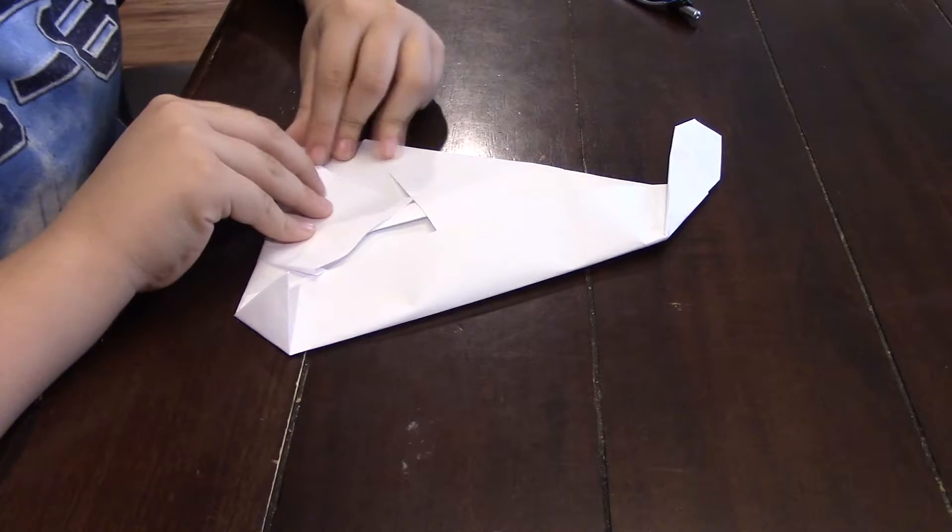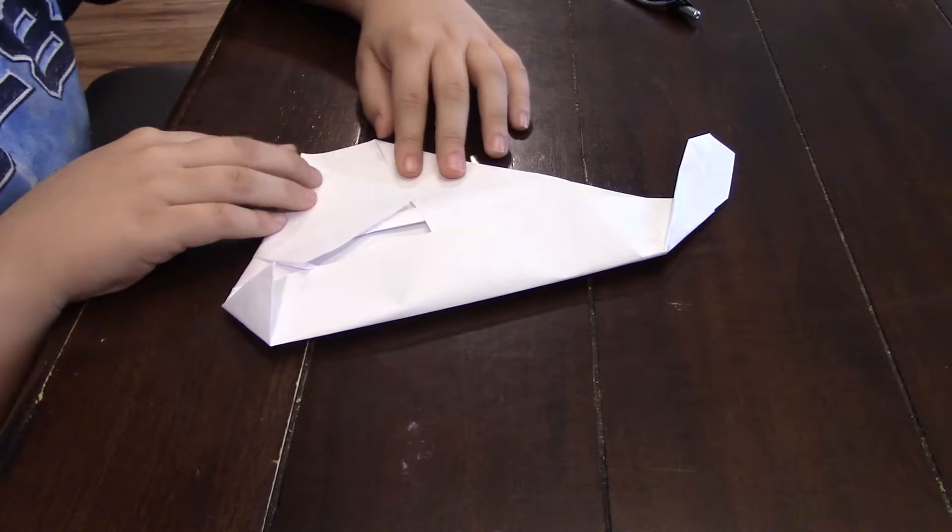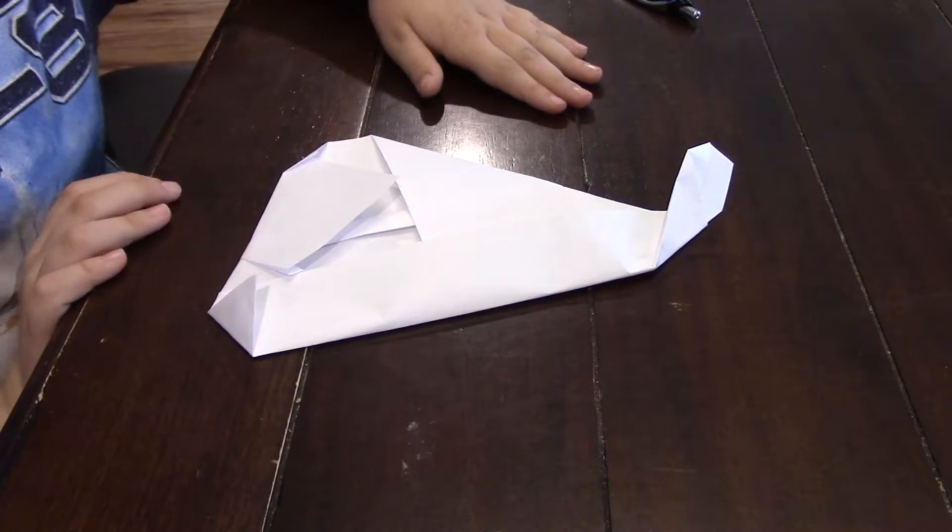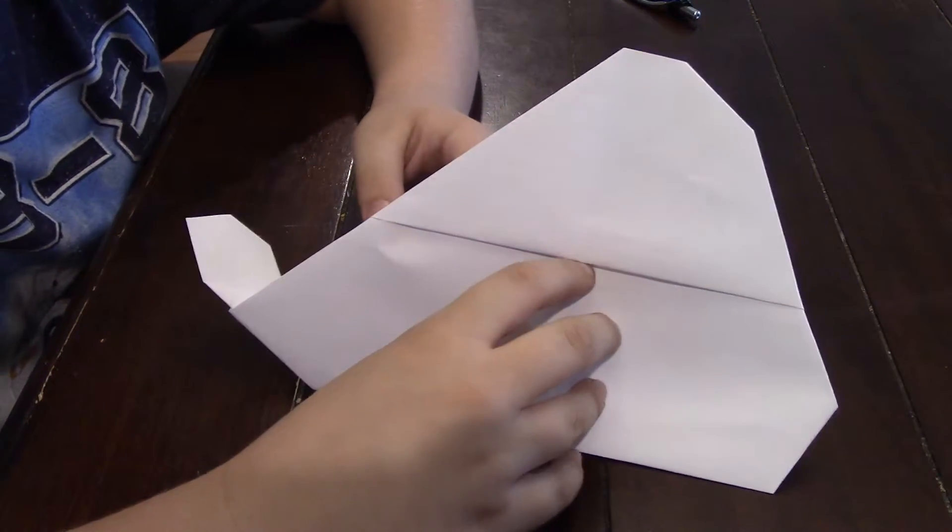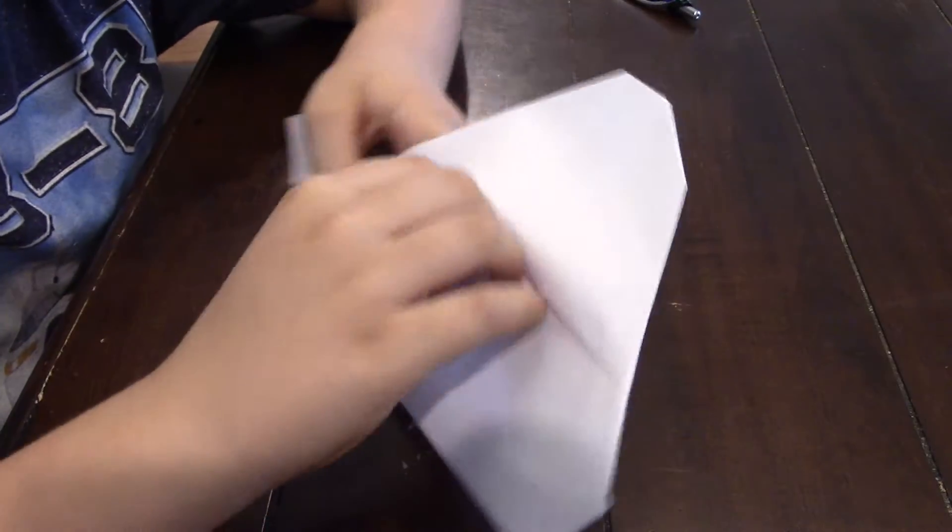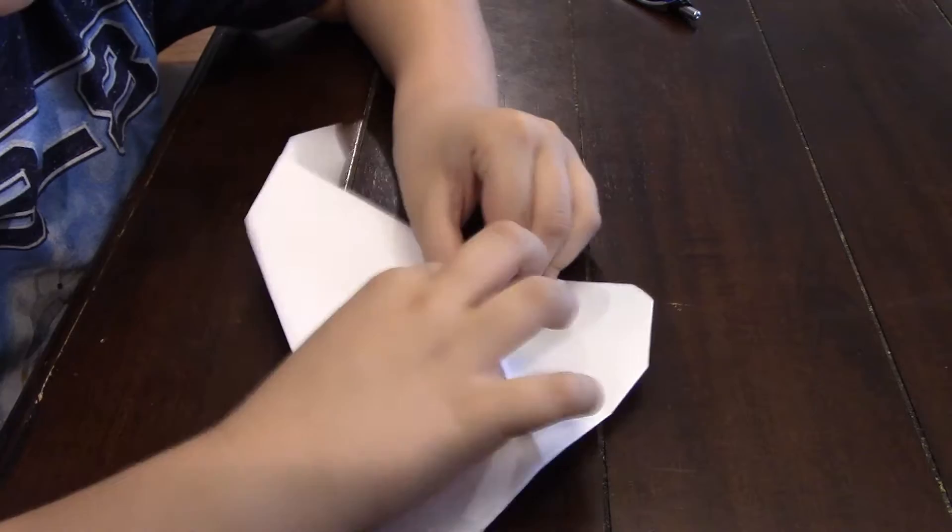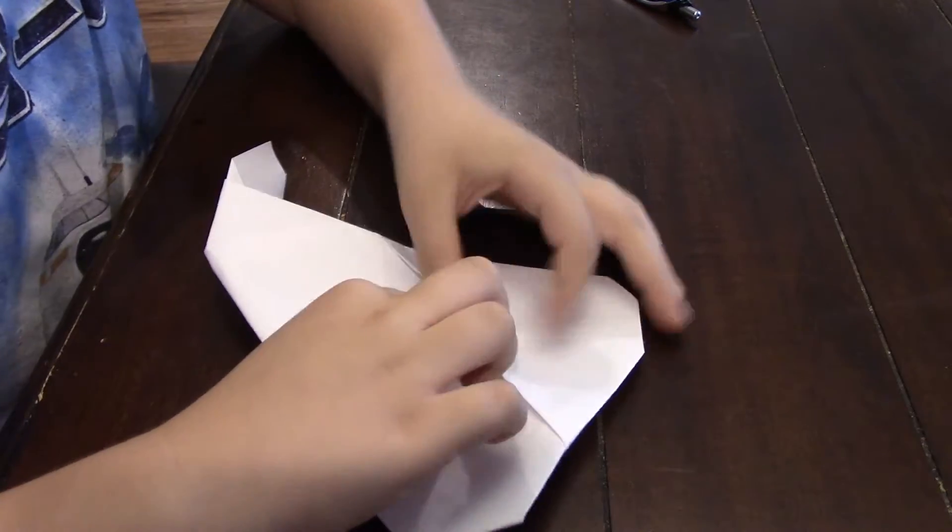And now just to round out his head a little, we're just going to take this one fold and fold it right there. Now flip it over and you'll see you have Jabba. Now just to open his mouth a little. There's Jabba.